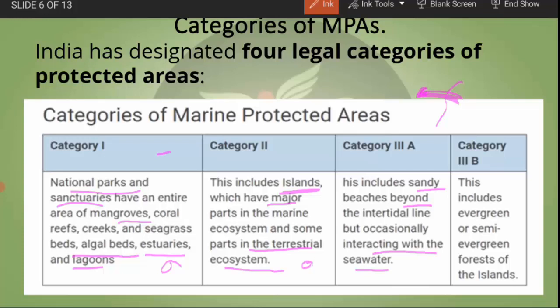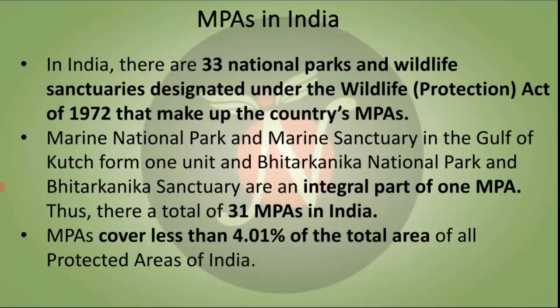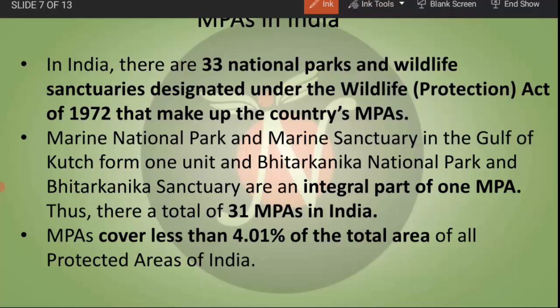Category 3B includes evergreen or semi-evergreen forests of islands. In India, there are 33 national parks and wildlife sanctuaries designated under the Wildlife Protection Act of 1972 that make up the country's MPAs. Marine National Park and Marine Sanctuary in the Gulf of Kutch form one unit, and Bhitarkanika National Park and Bhitarkanika Sanctuary are an integral part of one MPA, making a total of 31 MPAs in India. MPAs cover less than 4.01% of the total protected area of India.